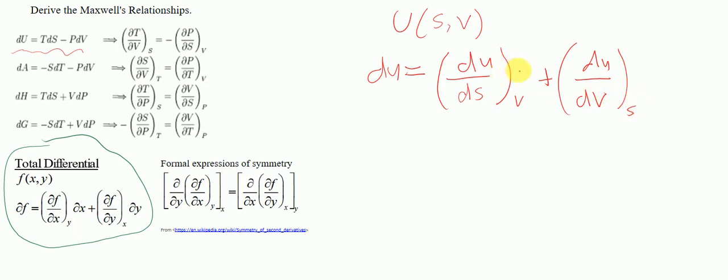I also forgot the dS and dV terms, corresponding to dx and dy. So we have this equation after using the total differential. We also know that du = TdS - PdV, and we can see the similarities. T corresponds to ∂u/∂S at constant V.